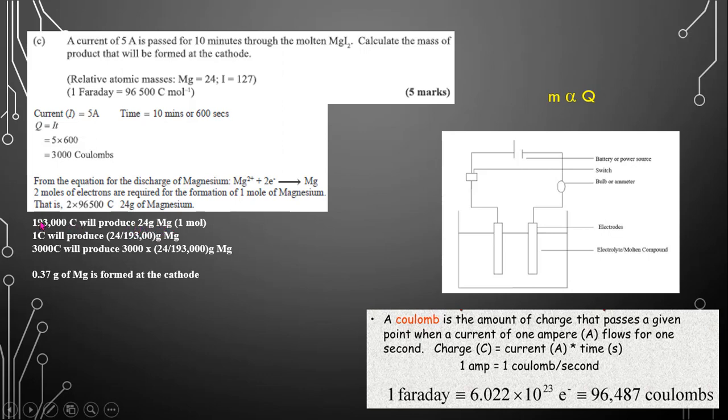Now what we need to do, we need to find for 3,000 coulombs because this is the charge actually occurring in the cell. So you find for one, you just divide both sides by 193,000 and then you find for 3,000 coulombs. And your end result will be 0.37 grams of magnesium. And we know magnesium is also formed at the cathode.